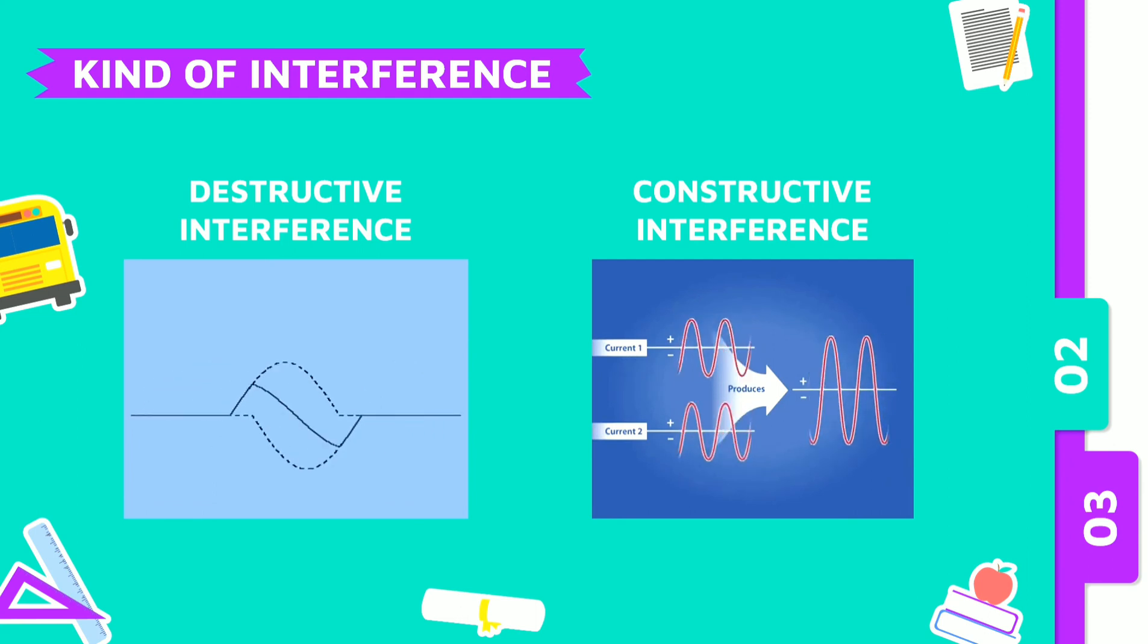The second one is constructive interference. It's the opposite meaning from destructive. When two waves come in the same shape of crest or trough from two opposite directions, when they meet, they will build each other's waves even bigger than before. Like the superposition principle, we consider the crest as positive, then those crests will produce a bigger amplitude.